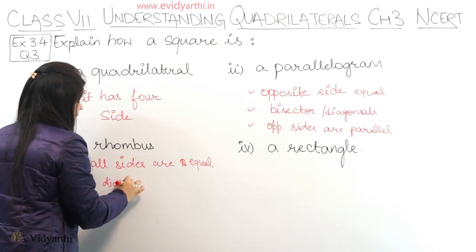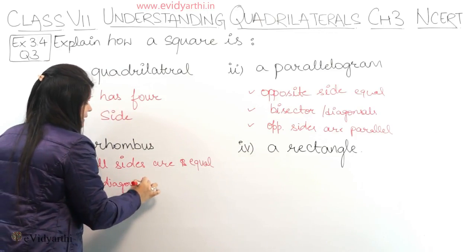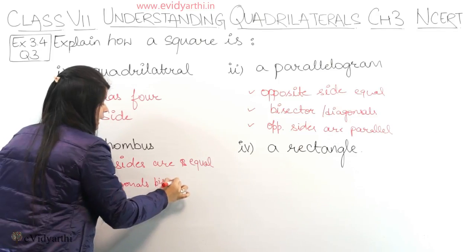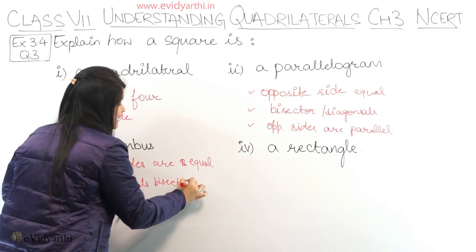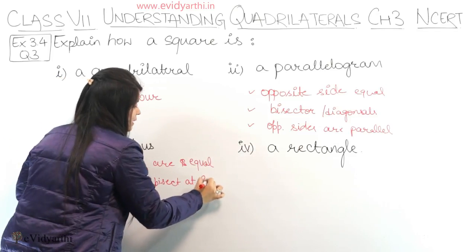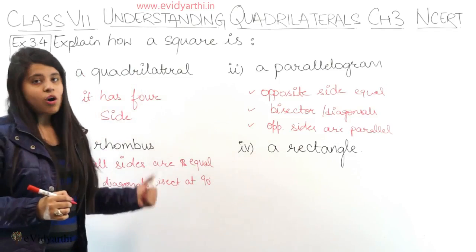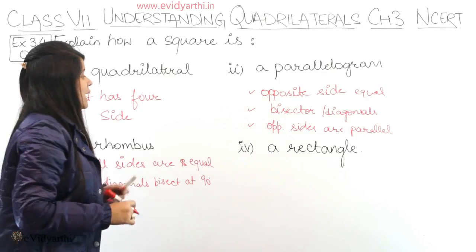One more point: diagonals bisect at 90 degrees. Square में भी यही चीज़ होती है और rhombus में भी.